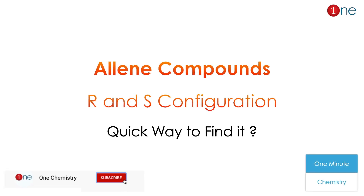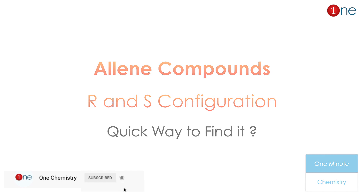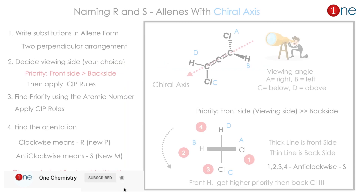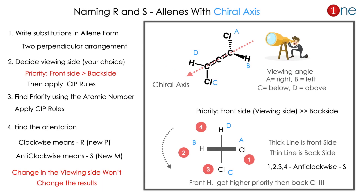Welcome to One Chemistry — this is the One Minute Chemistry series. Within a minute we are going to see how we can find R and S configuration of allene compounds. Allene compounds are chiral with a chiral axis, so it is difficult to find R and S configuration by the normal method.